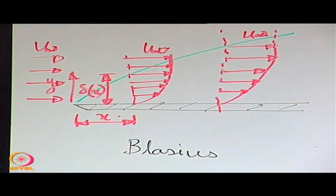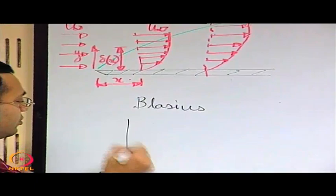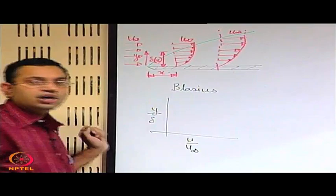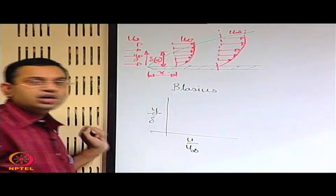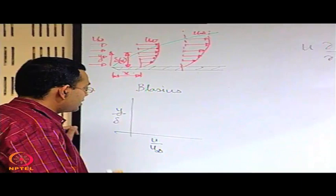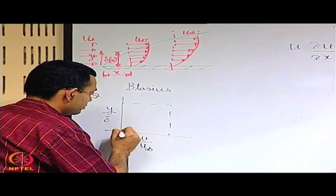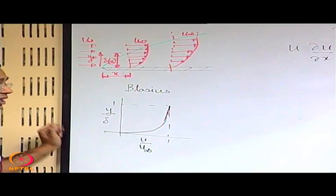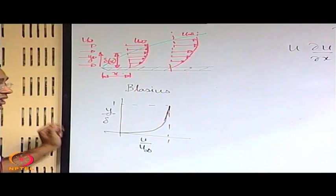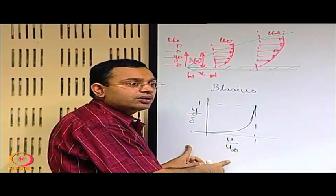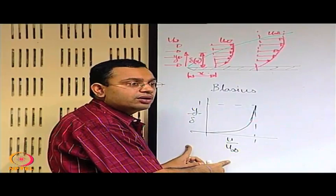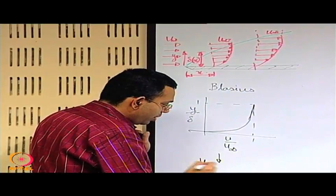This motivated Blasius to make a plot of u/u∞ versus y/δ, because it normalizes the stretch — u/u∞ is always confined between 0 and 1, and y/δ is also always confined between 0 and 1. It was found that if you make such a plot, then u/u∞ as a function of y/δ shows the same functional variation at all sections. This means behavior at all sections may be combined and normalized in this particular functional form.